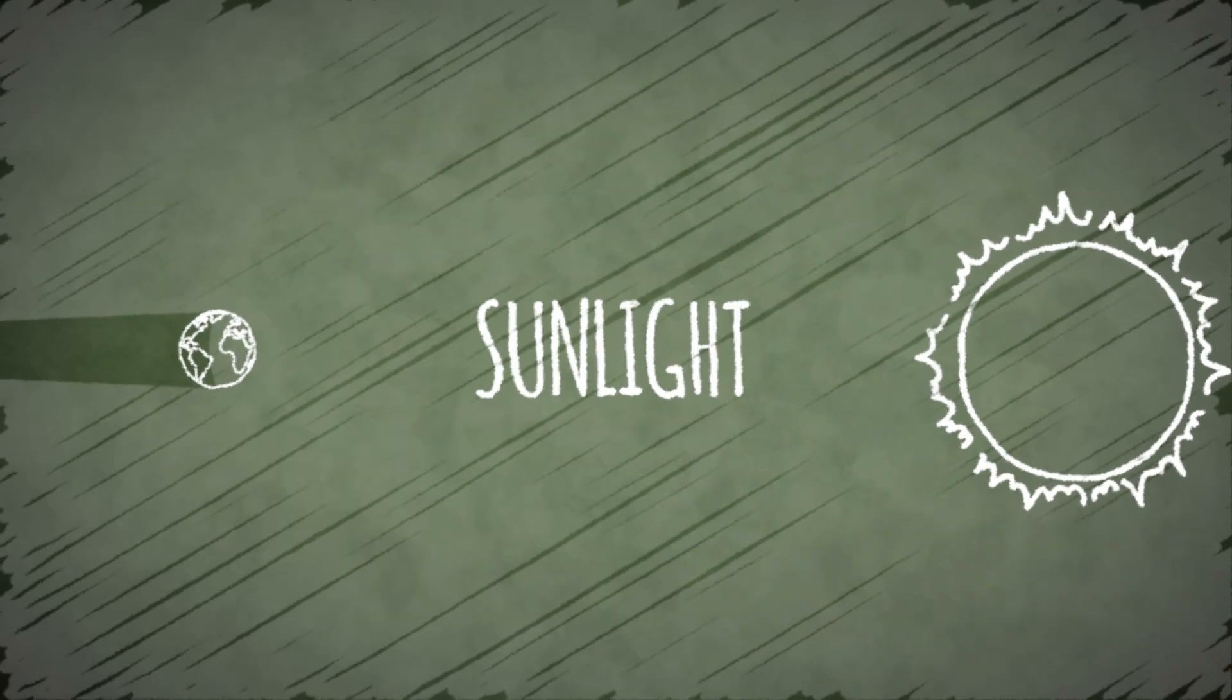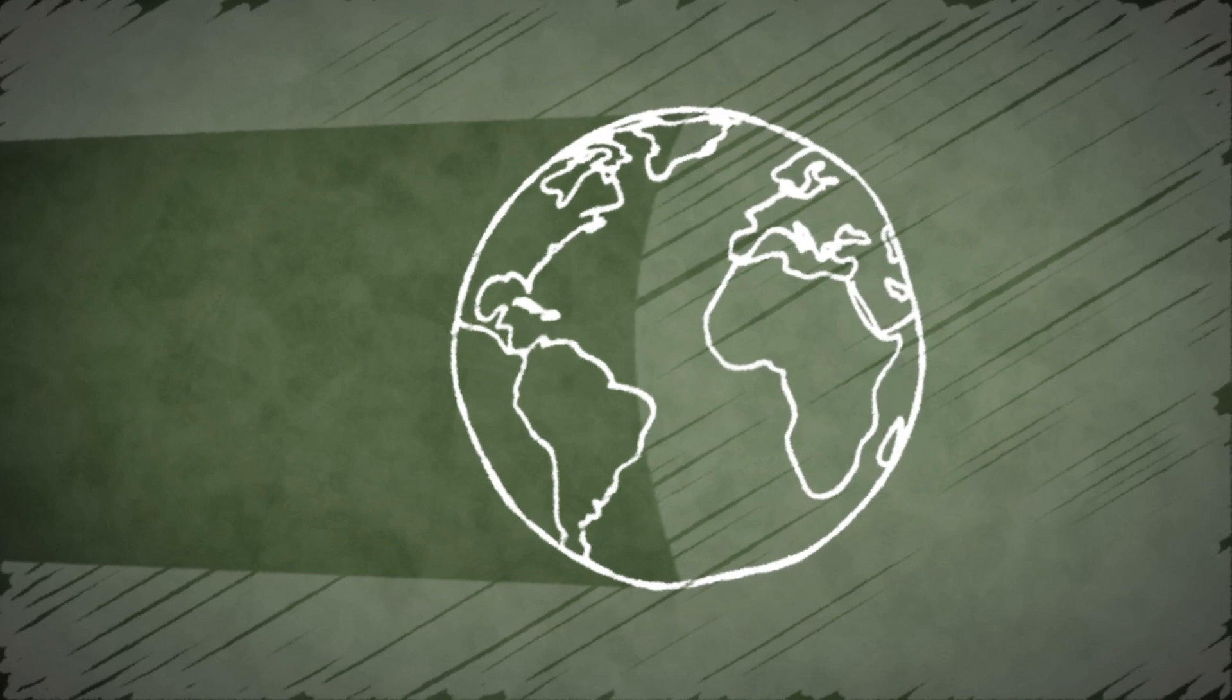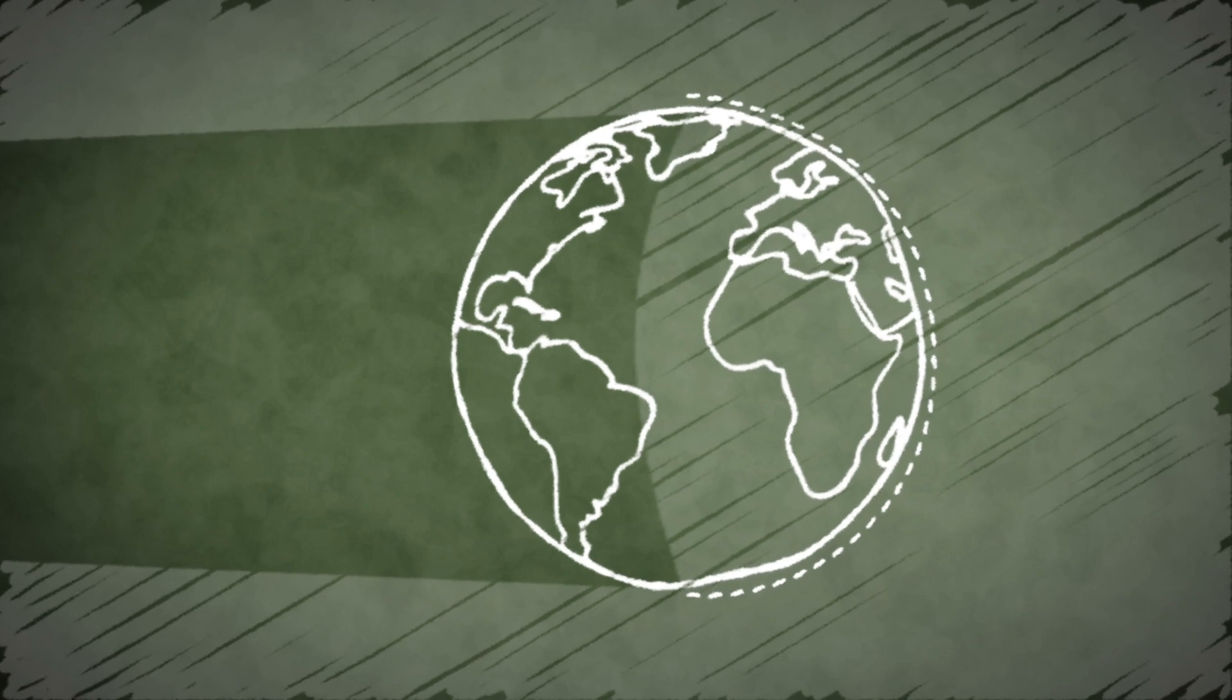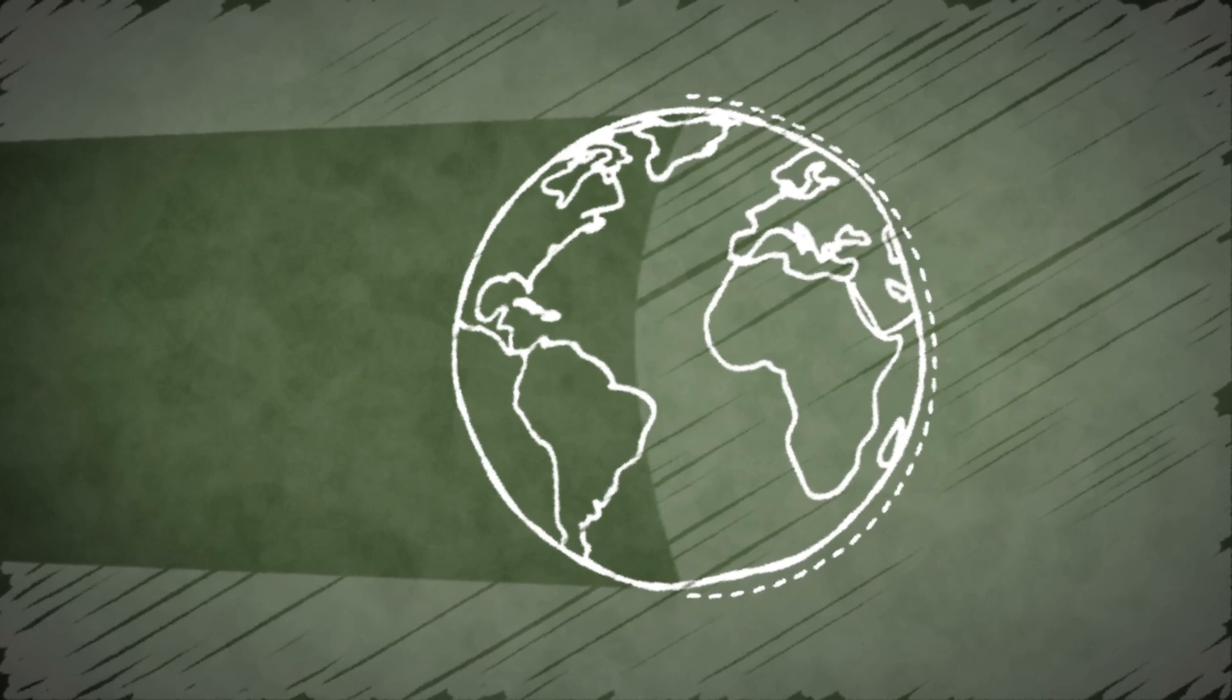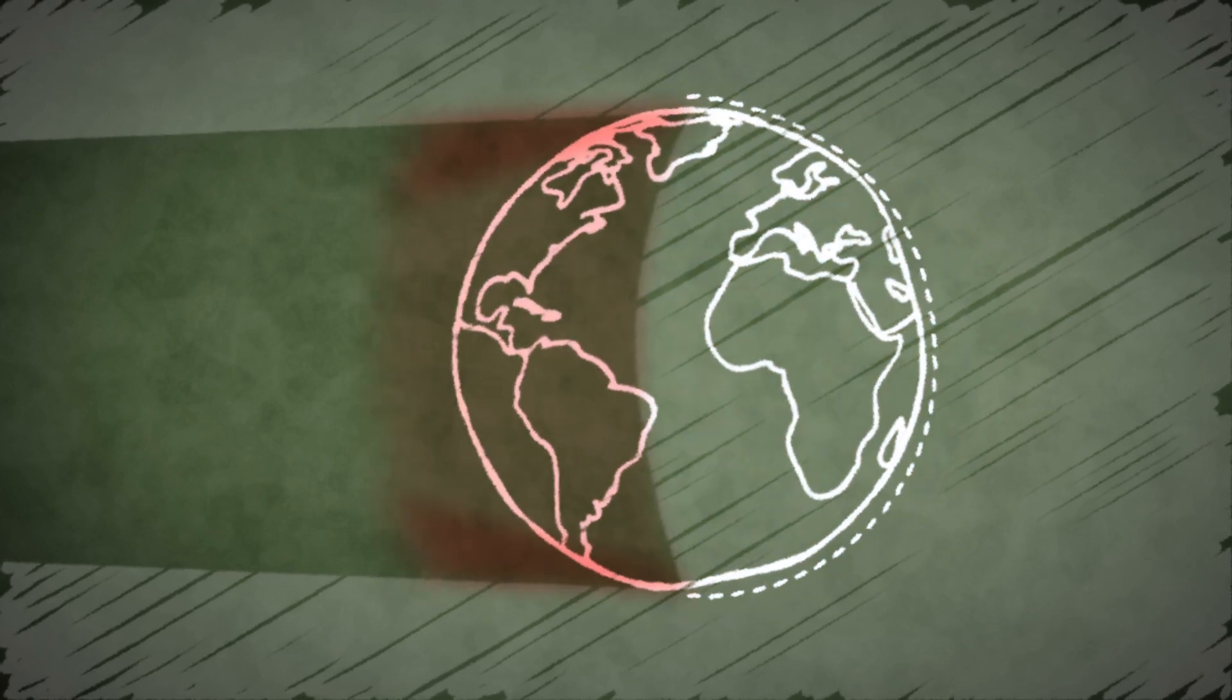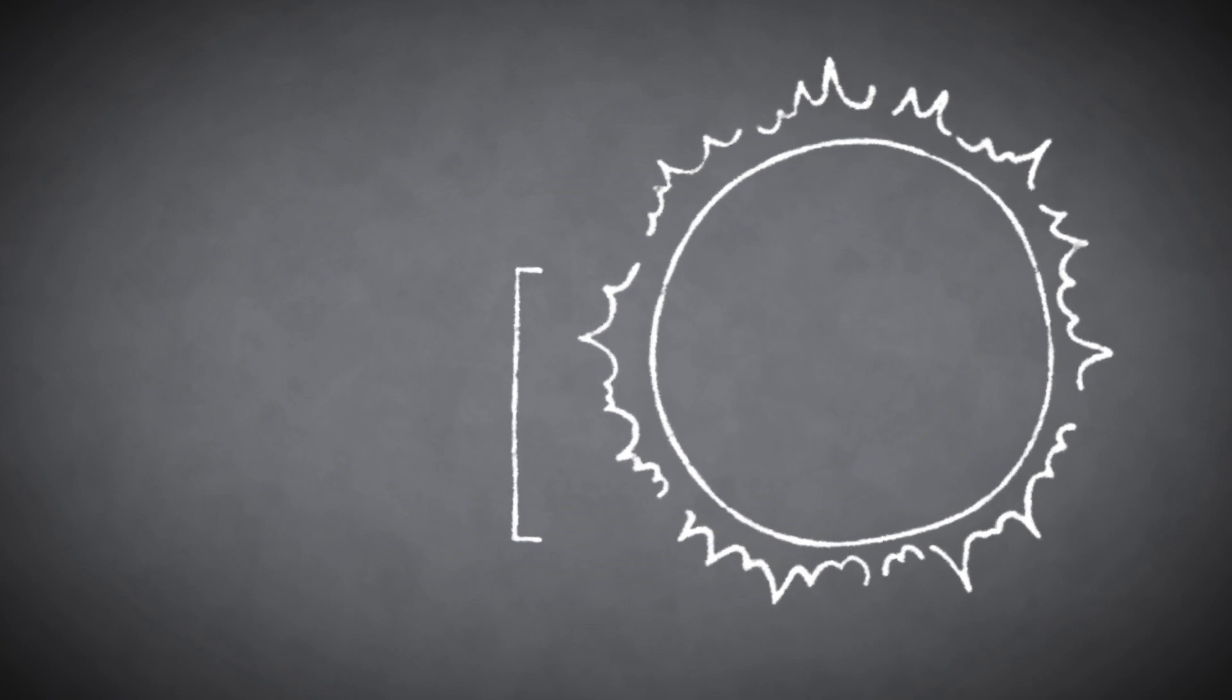You might expect our shadow to be completely dark, but it isn't. As the Sun's light shines on our planet and casts its shadow into space, it passes through our atmosphere, where dust particles and air molecules scatter out the blue color in its light, producing our blue skies.